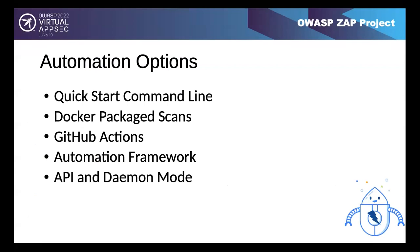Finally, there's the API in daemon mode - the original way to automate ZAP. You can start ZAP in daemon mode with no GUI and have nearly full control via the API, similar to using it via the desktop. Nearly everything is possible via the API - fuzzing is the one thing not yet available. The package scans and Automation Framework were introduced because many people found the API complex. If you want full control, use the API; for standard things, the package scans and Automation Framework are easier.